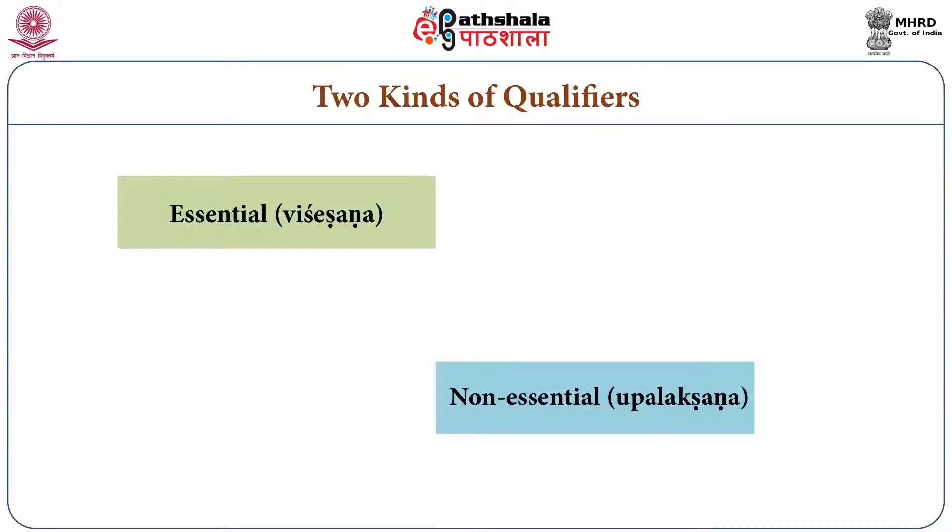It is necessary to understand the concept of Vishishta, since we are going to discuss Vishishtabhava. There are two kinds of qualifiers in Sanskrit — and it is difficult to explain this concept in English as there are no equivalent words. The two terms are Vishishana and Upalakshana. Vishishana is essential, and Upalakshana is non-essential. Vishishana is defined as something which distinguishes while being present, and Upalakshana distinguishes something without being present there.